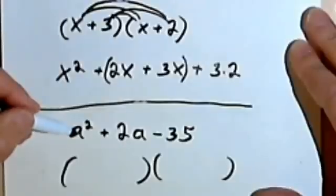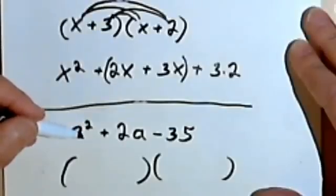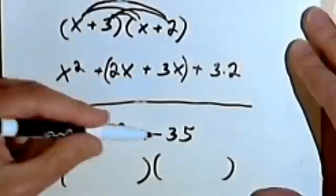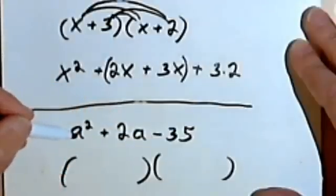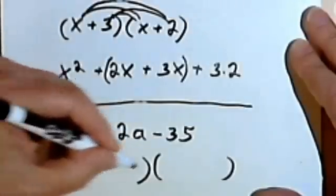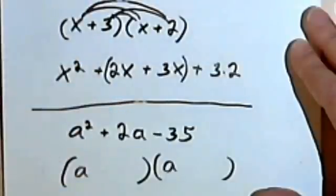Looking at the first term, I've got a squared, so that must have come about when this was foiled together by multiplying an a times an a. So I would have an a here and an a here.